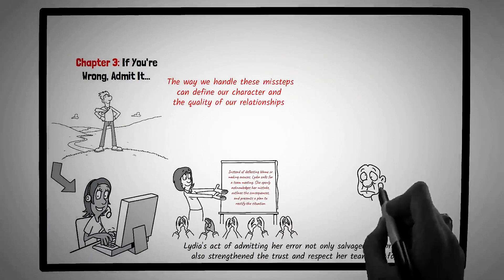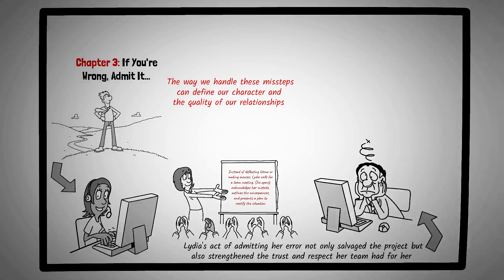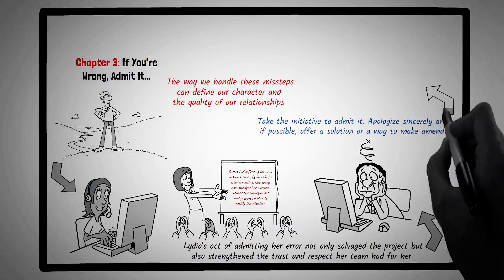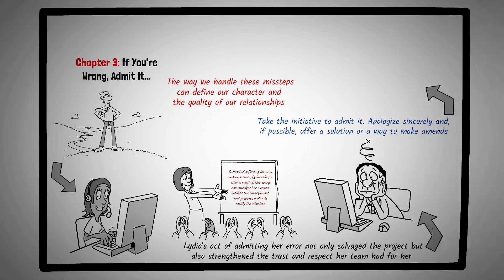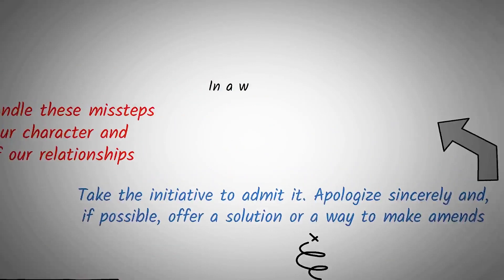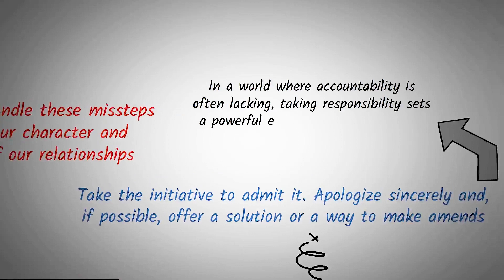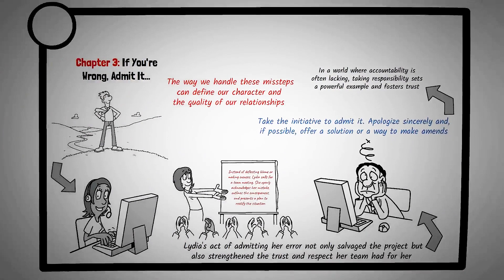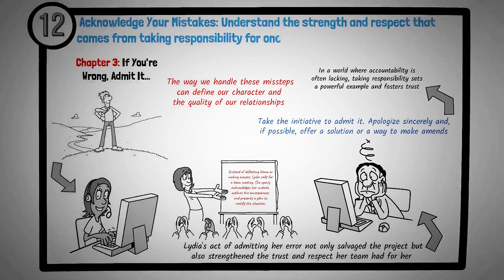The next time you find yourself in a situation where you've made an error, whether it's missing a friend's important event or making a mistake in a work task, take the initiative to admit it. Apologize sincerely, and if possible, offer a solution or a way to make amends. This act of accountability can transform potential conflicts into opportunities for growth and understanding. Owning up to our mistakes isn't a sign of weakness. It's a testament to our integrity and authenticity. In a world where accountability is often lacking, taking responsibility sets a powerful example and fosters trust. Principle number twelve is acknowledge your mistakes. Understand the strength and respect that comes from taking responsibility for one's actions.